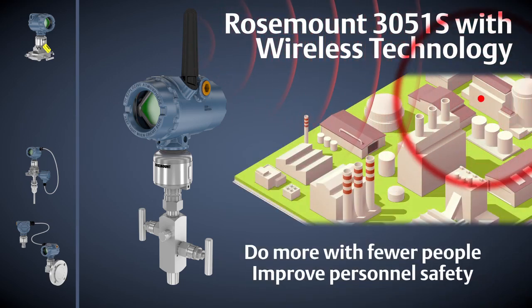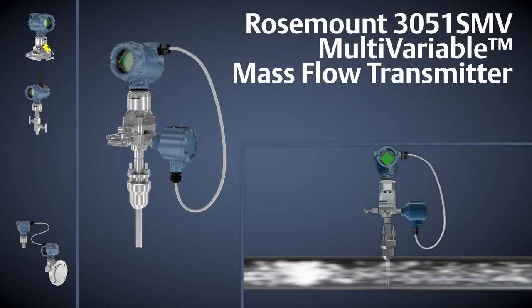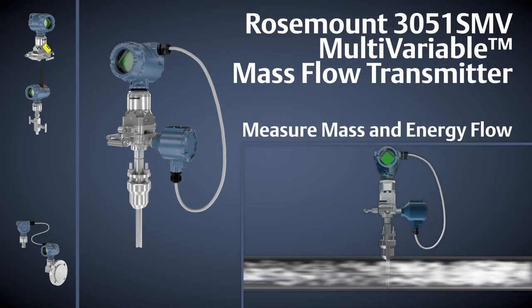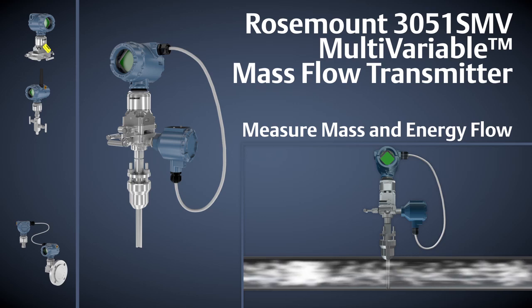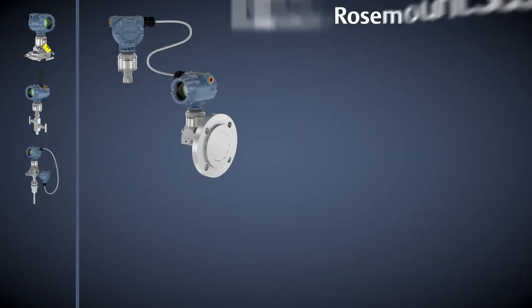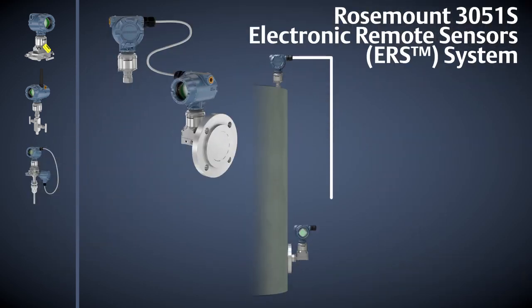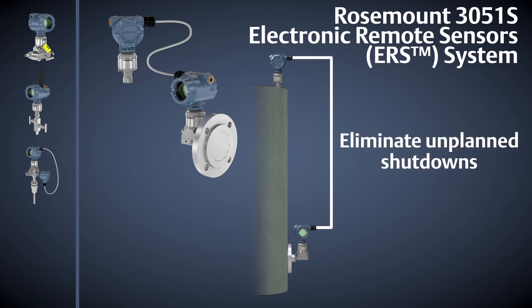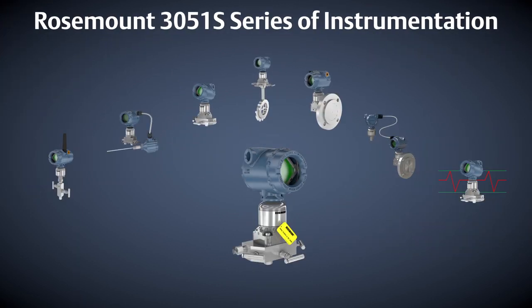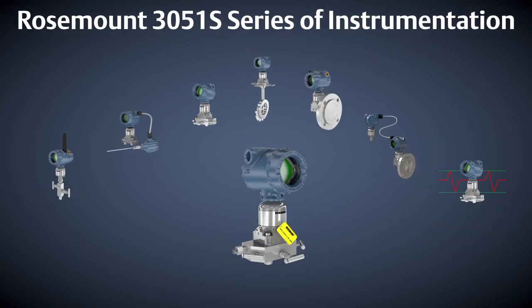Reduce manual operator rounds, do more with fewer people, and improve personnel safety with wireless technology. Monitor where your energy is going with a multivariable transmitter that measures mass and energy flow rates. Eliminate routine maintenance and unplanned shutdowns through an innovative digital maintenance-free level measurement called electronic remote sensors. No other measurement technology on the market allows you to do more with less.